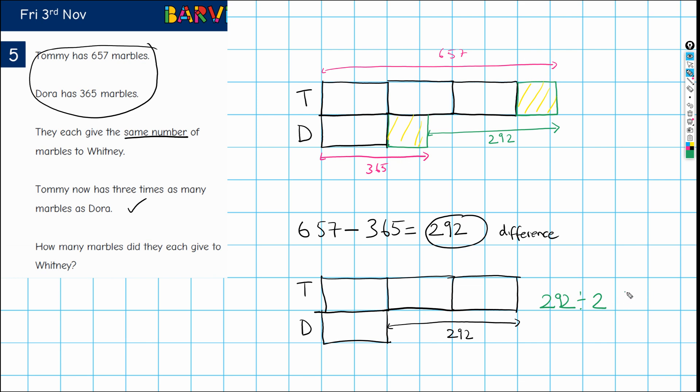So each of these parts has a value of 146. I don't have to draw this all in, it's just to show. And again, it's the same up here. Remember, this is just the same model. I have dispensed with these equal parts that were given away to Whitney.